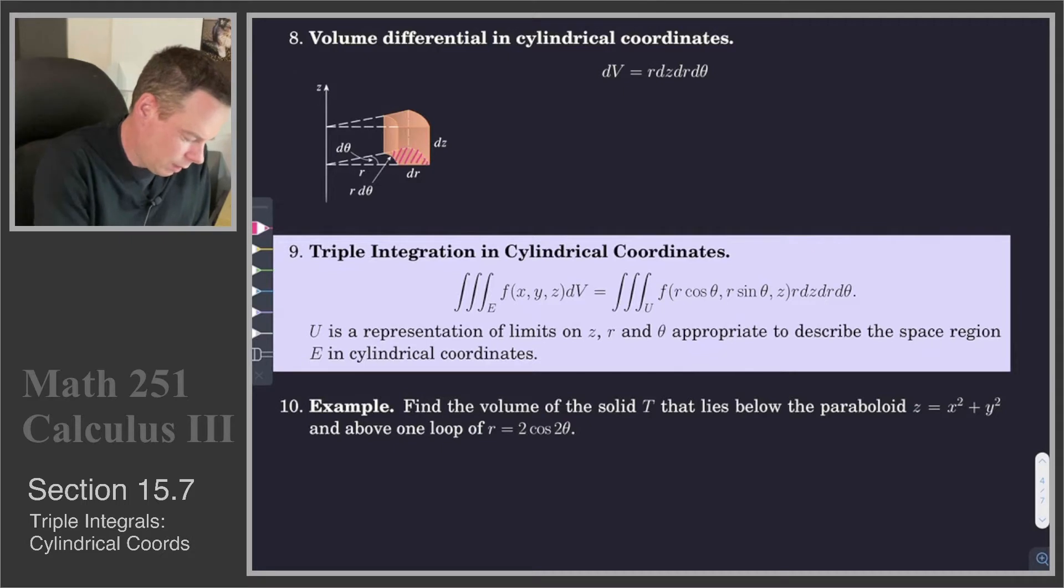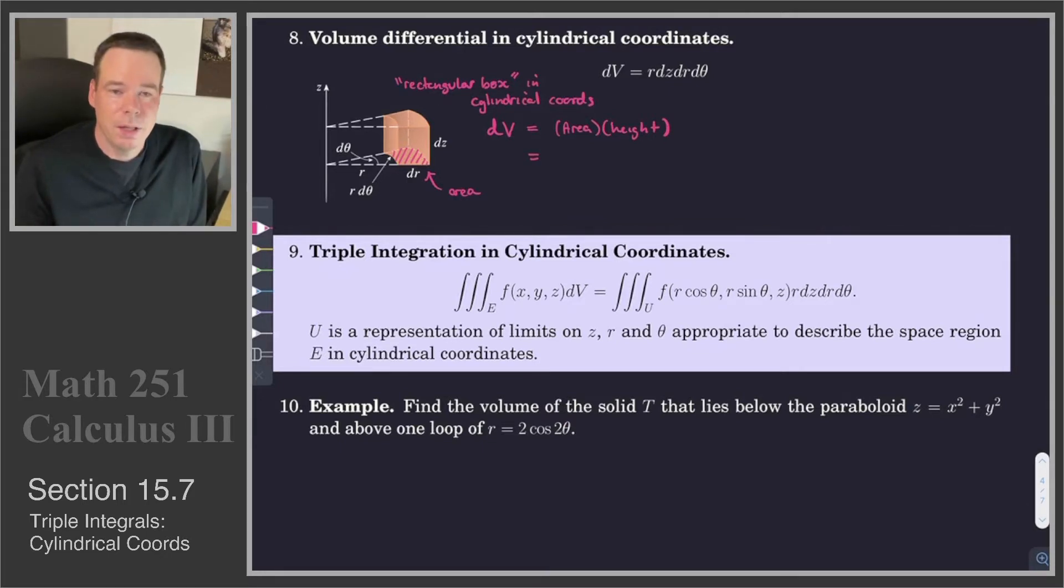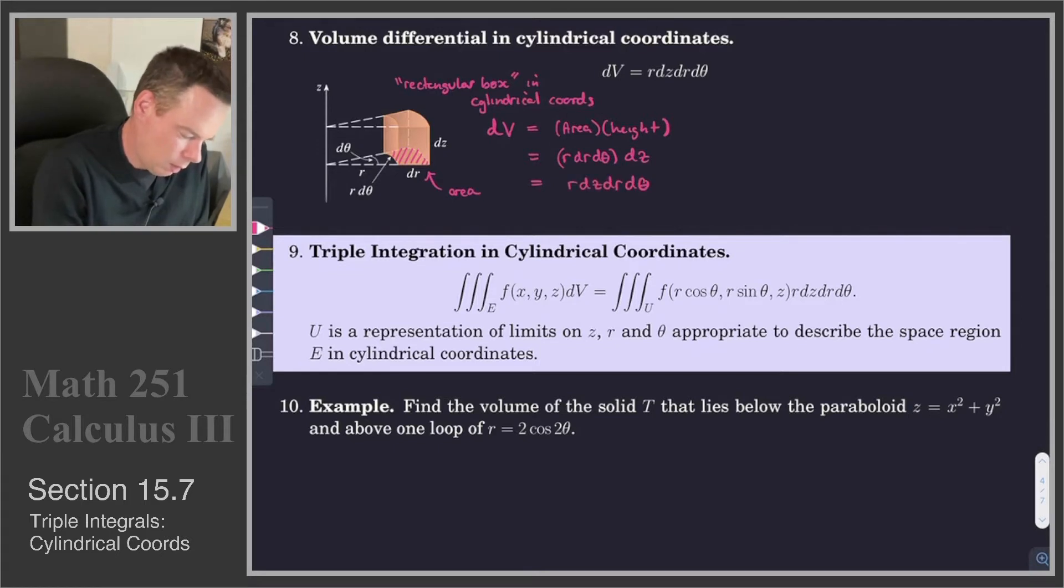Now why is that the expression we get? Well, this cylindrical rectangular box, we'll call it a rectangular box in cylindrical coordinates. What is the volume of this? That's our DV, our volume element, a small rectangular box. It depends on the area of this cross section and then the height. So it's base area times height. Our base area, that's the area of this area element in polar coordinates. So that's R DR D THETA. And then what is our height? Our height is DZ. So this is R DZ DR D THETA.